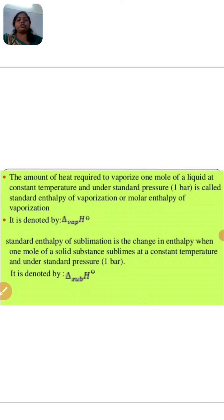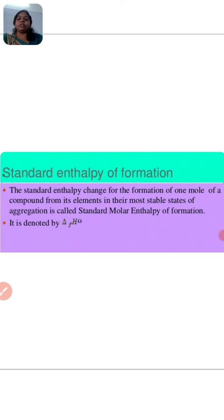Standard enthalpy of sublimation is the change in enthalpy when one mole of a solid substance sublimes at constant temperature and under standard pressure, denoted by Δsub H°. Standard enthalpy of formation is the enthalpy change when one mole of a substance is formed from its elements in their most stable state, denoted by Δf H°. This completes the third part. The next part of this chapter will be explained in the next video. Thank you very much, students.